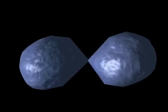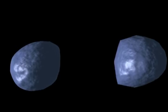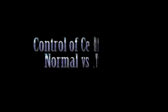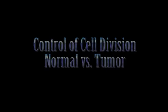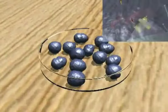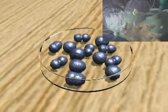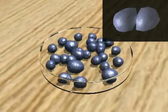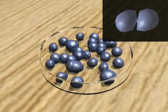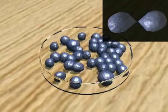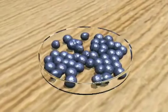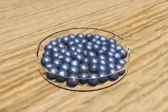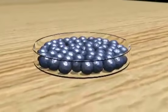Cancer cells do not obey this rule and will divide even if they do not receive appropriate signals. In addition to the signals that normal cells receive telling them to divide, they are also told when to stop dividing. This prevents too many cells from being made. The cell division process is a highly ordered process. This is a critical issue in cancer because cancer cells do not obey or require normal signals for division.